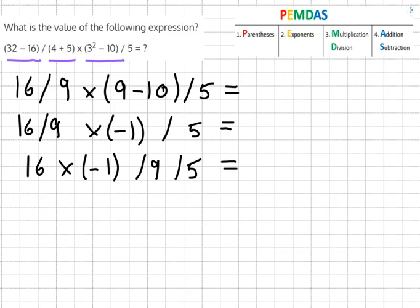And then it's simple multiplication and division. So we're going to clean it up and do 16 times minus 1 equals minus 16 over 9 times 5 which equals 45.